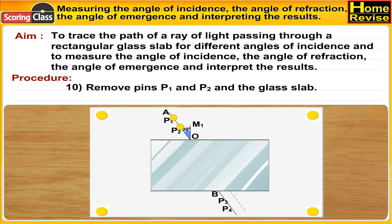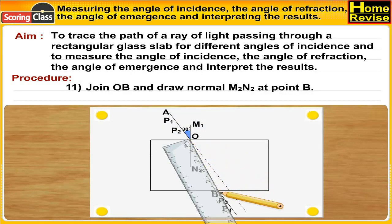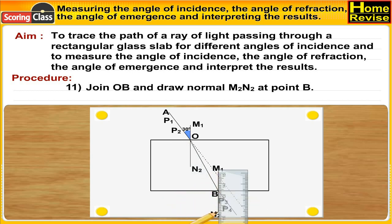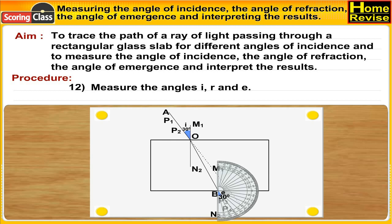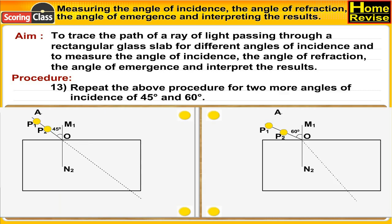Remove pins P1 and P2 and the glass slab. Join OB and draw normal M2N2 at point B. Measure the angles I, R, and E. Repeat the above procedure for two more angles of incidence of 45 degrees and 60 degrees.